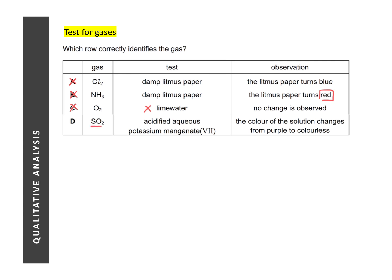For sulfur dioxide, it's actually a reducing gas. And it will reduce your oxidizing agent, which is your acidified potassium manganate 7. And in the chapter of redox, we learn that it will turn from purple to colorless.